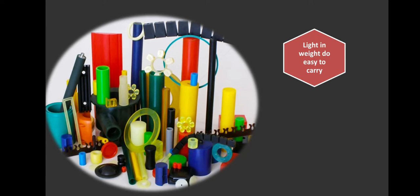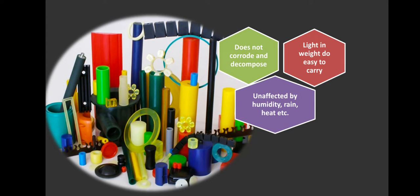Now looking at the properties of plastic: they are light in weight, so easy to carry. You can easily lift plastic, you don't need extra strength. Even small children are able to lift many plastic products. Plastic does not corrode and decompose, so they are unaffected by humidity, rain, heat, etc. It doesn't matter if there's change in season, heavy rain, extreme temperatures, or moisture - plastic will not get affected and the products do not decompose or corrode.